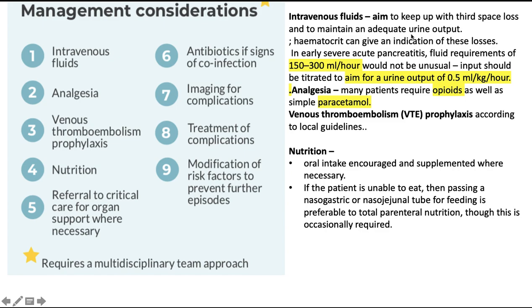Management during pregnancy: IV fluids should aim to keep up with third-space losses and maintain adequate urine output. Haematocrit can indicate these losses. In early severe acute pancreatitis, fluid requirement of 150 to 300 ml per hour would not be unusual; input should be titrated to aim for a urine output of 0.5 ml per kg per hour. Many patients require opioids as well as simple paracetamol for analgesia. Venous thromboembolism prophylaxis should be given per local guidelines.